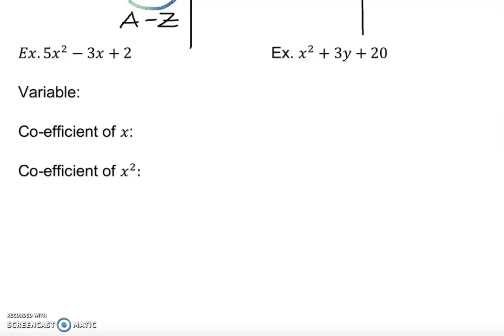So we look into this expression down here, 5x² - 3x + 2, and we want to see what is the variable. Well clearly I see there is an x is the variable, or you can say x square in this case is also variable.